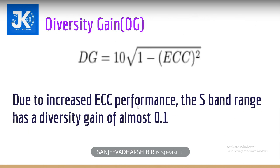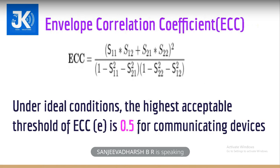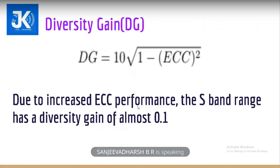Next comes diversity gain. To find diversity gain, we first need to find the envelope correlation coefficient. The formula for diversity gain is: DG = 10 × sqrt(1 − ECC²). Due to the ECC performance, the S-band range has a diversity gain of almost 10 for our design.